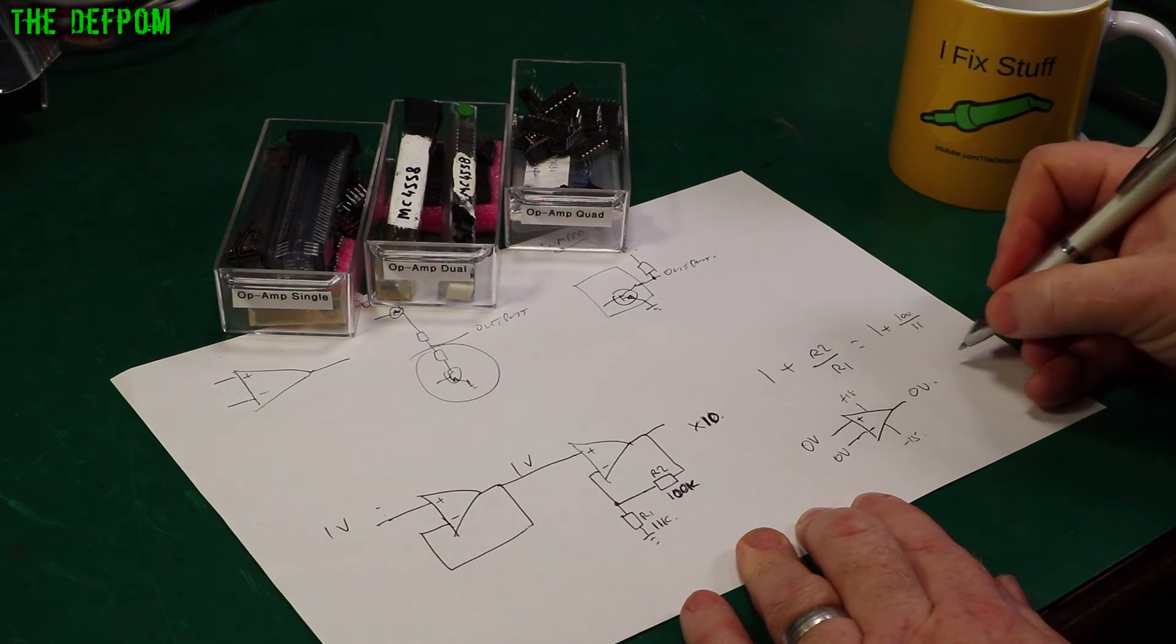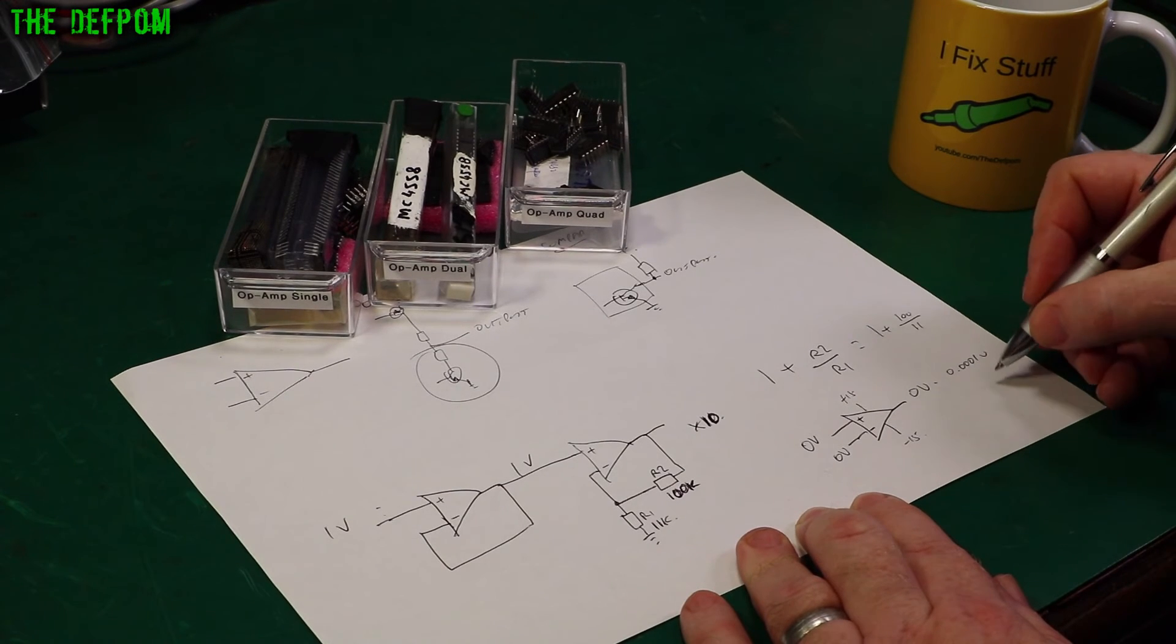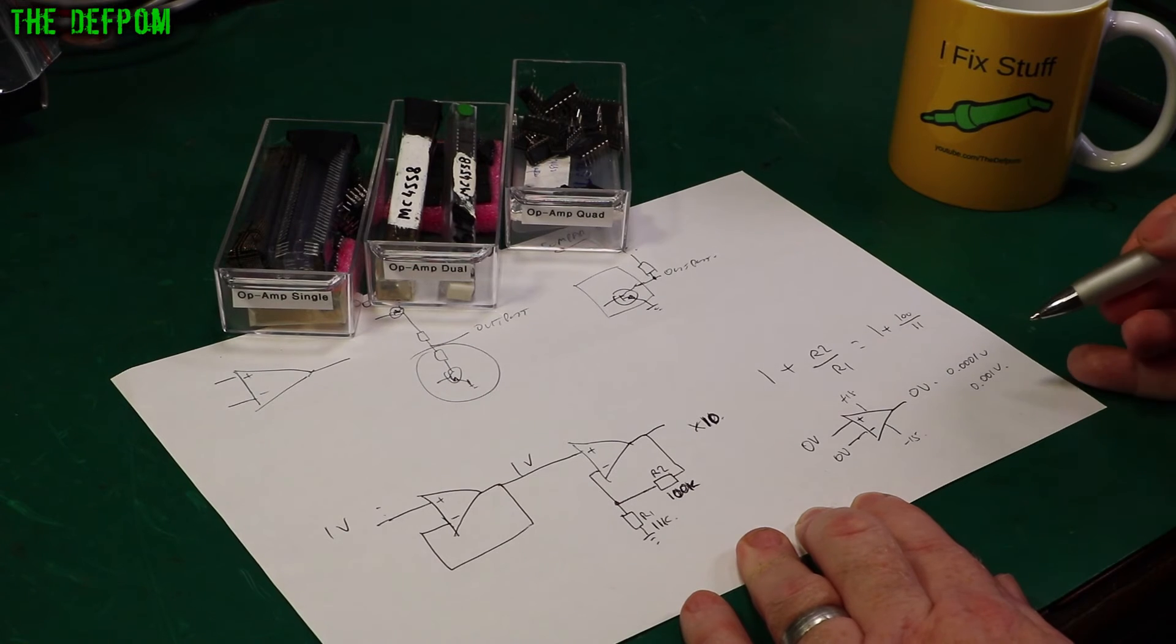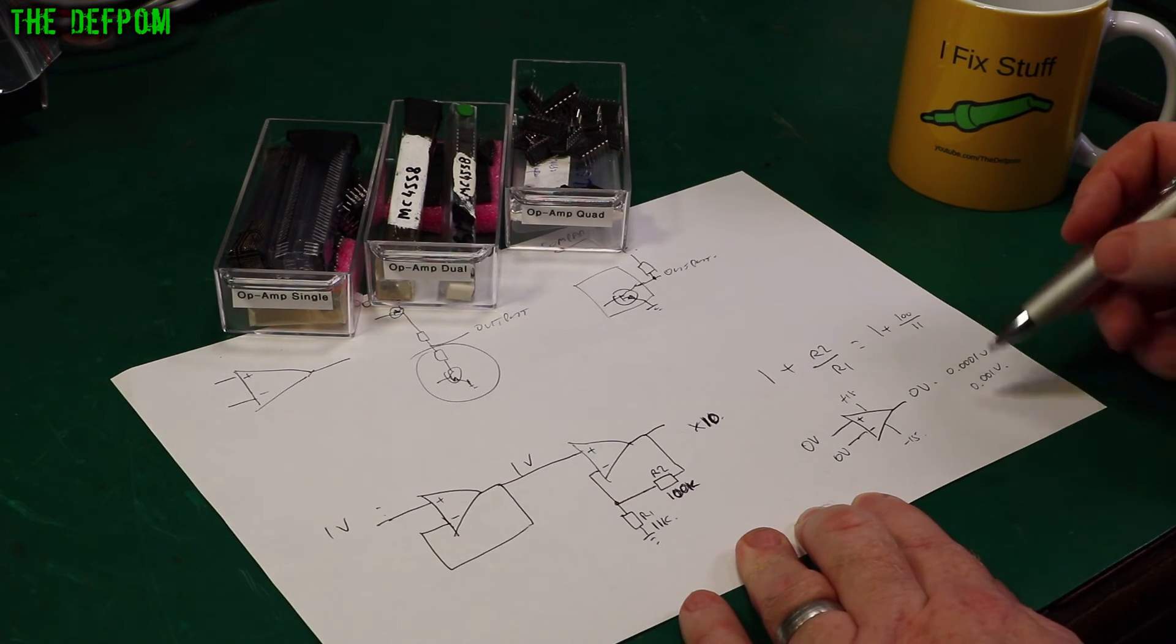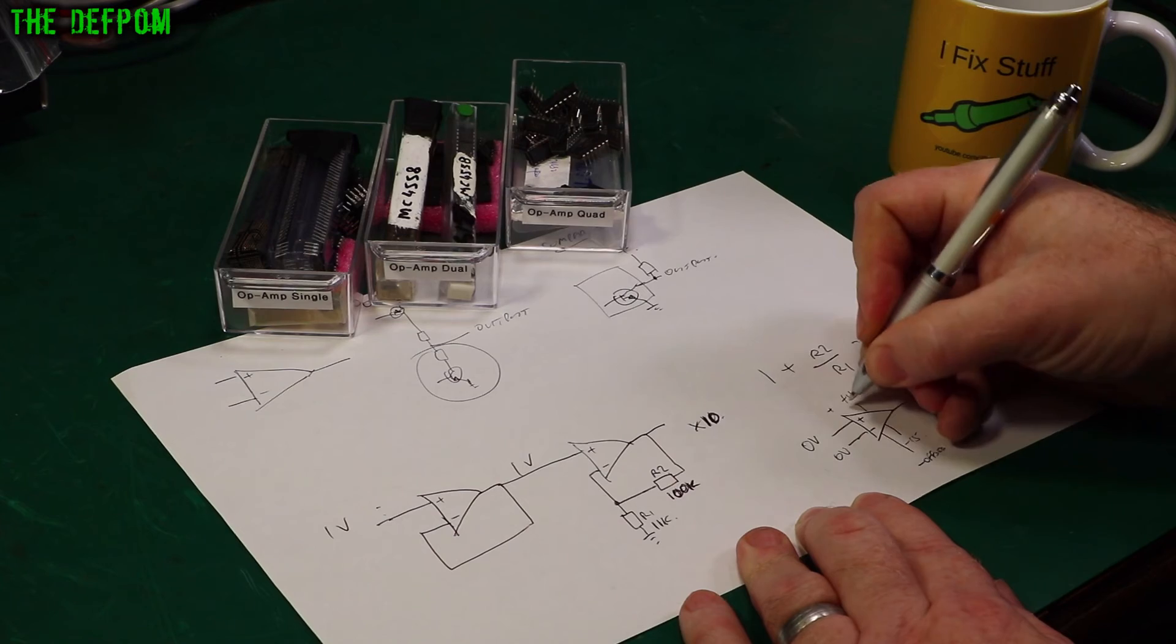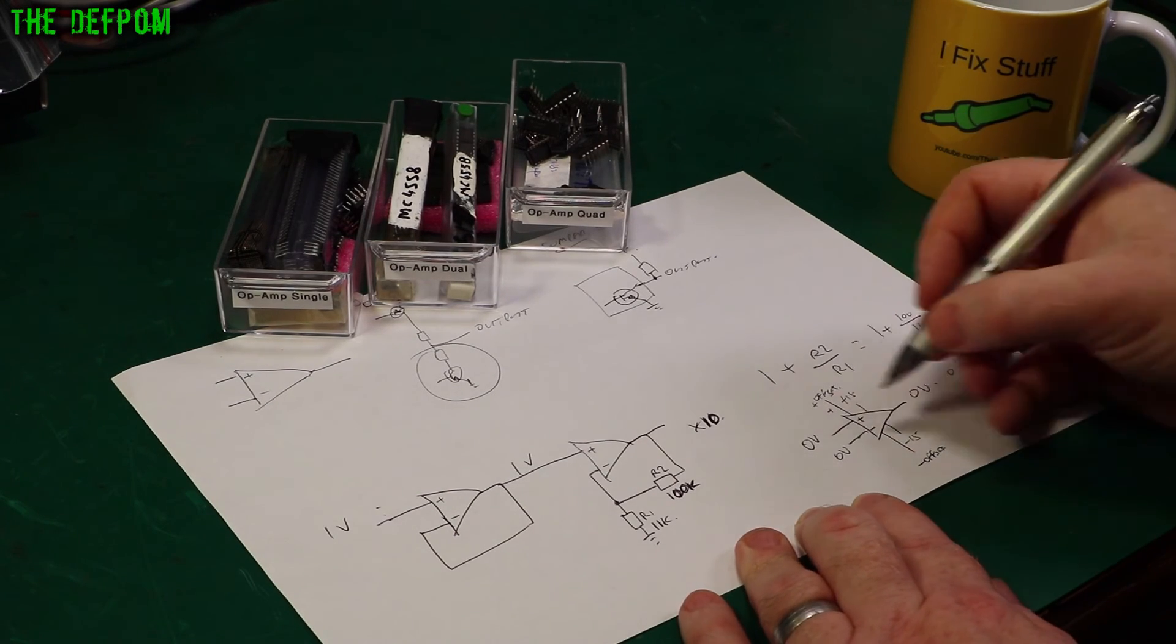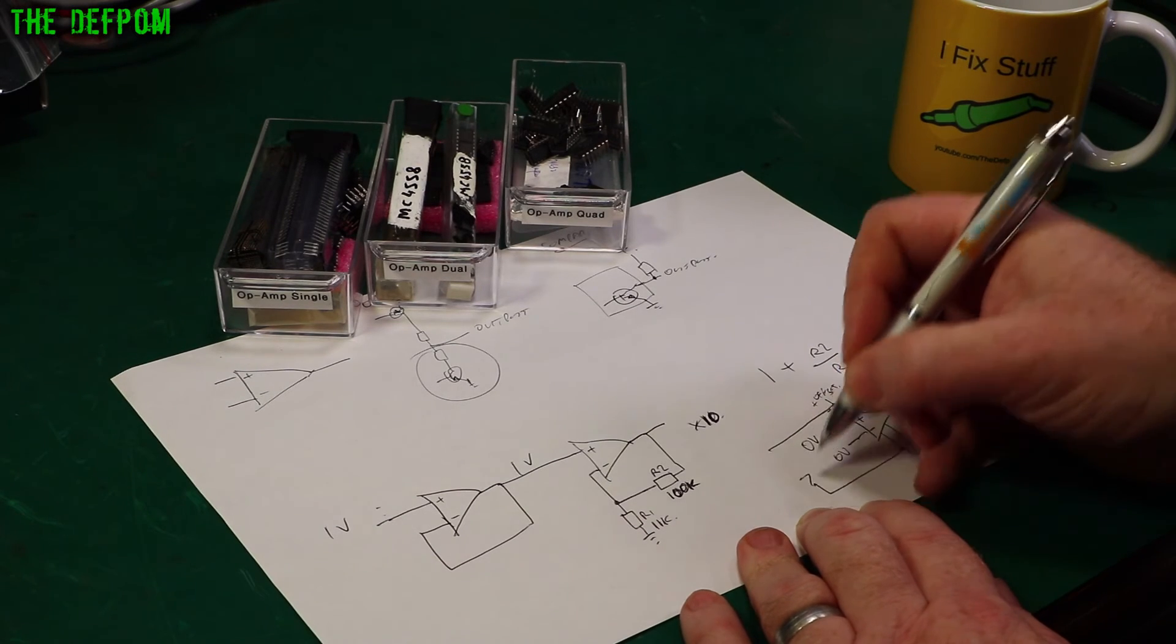You might find this might be 0.0001 volts or worse. It might even be one millivolt out, an order of magnitude worse or even potentially worse. Now if that really small error matters to you, then you might need one which has trimming.